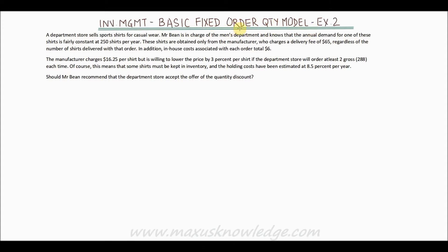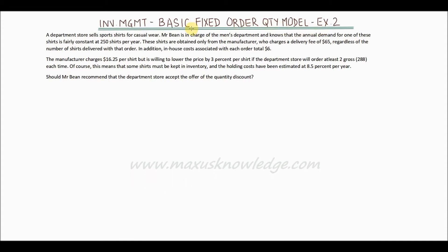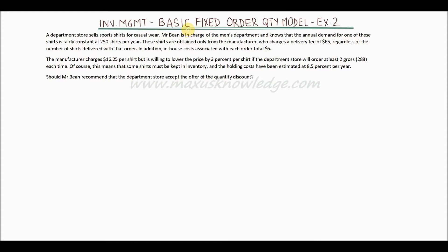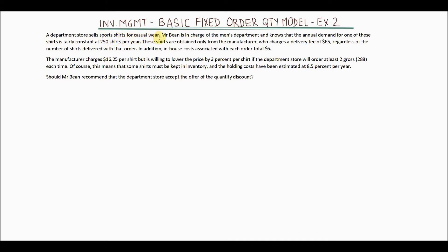We will look at the basic fixed order quantity model with another example. When I say 'basic,' it means that all the information is known and certain. So: a department store sells sports shirts for casual wear. Mr. Bean is in charge of the men's department and knows that the annual demand for one of these shirts is fairly constant at 250 shirts per year.